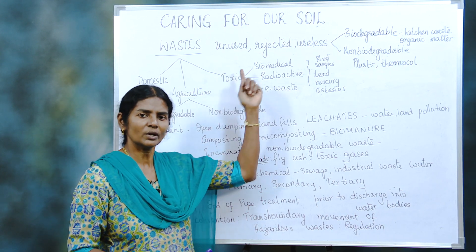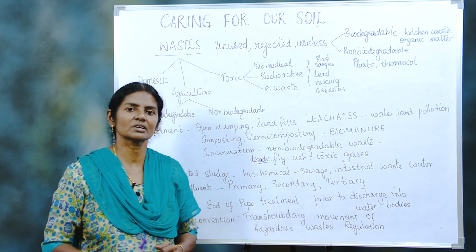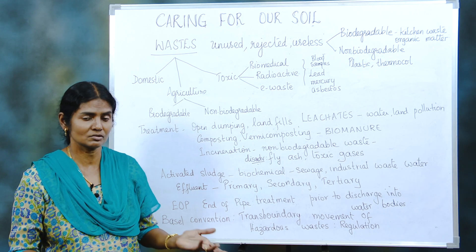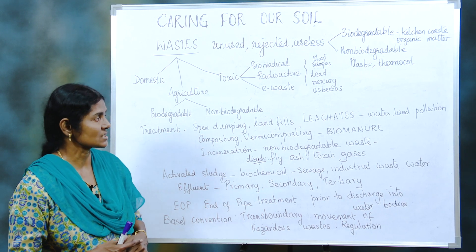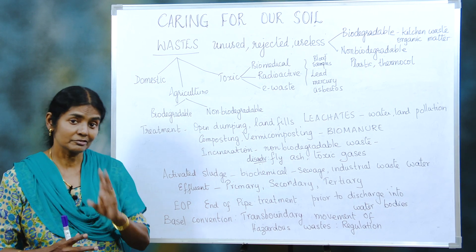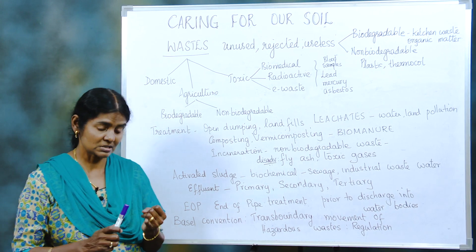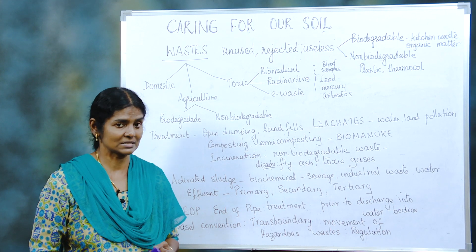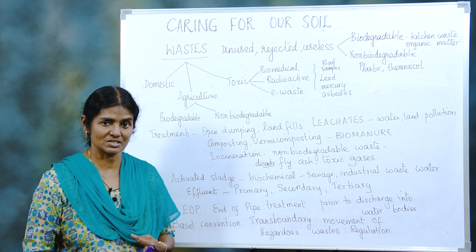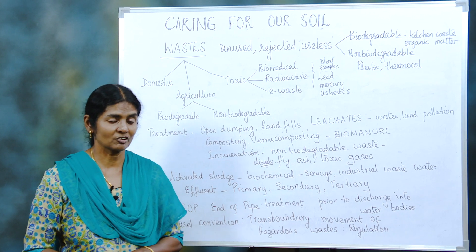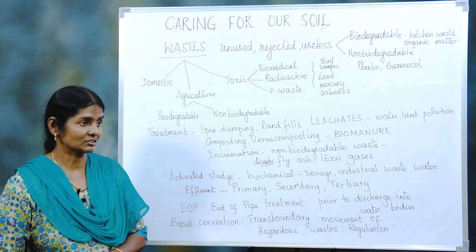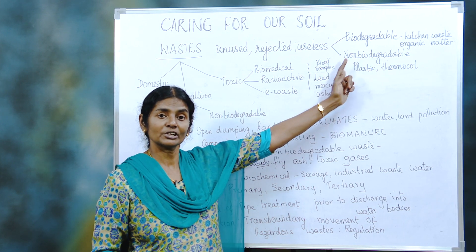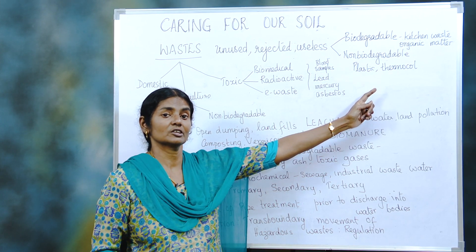How do we define waste? It is something that is rejected, useless — all this is waste. But there are different types of waste. One is solid waste, some are liquid waste and some are gaseous waste. That is depending on the state of matter. We also classify them as biodegradable and non-biodegradable.